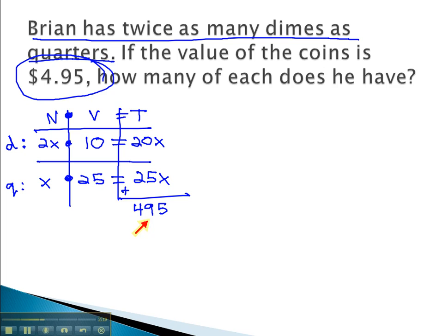Notice I write this number in cents, because the dimes and quarters were 10 cents and 25 cents, so to be consistent, we need 495 cents. Do not put it in dollars. Again, we get the equation to solve from this last column. 20x from the dimes plus 25x from the quarters equals 495.